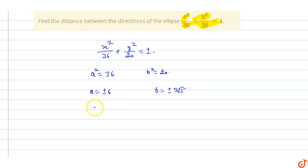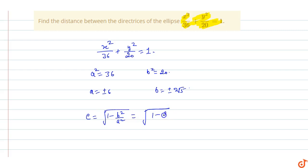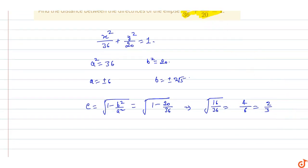Now I will find the eccentricity of the ellipse. e = √(1 - b²/a²) = √(1 - 20/36) = √(16/36) = 4/6, which equals 2/3. So the eccentricity of the ellipse is 2/3.